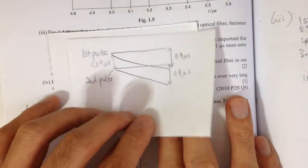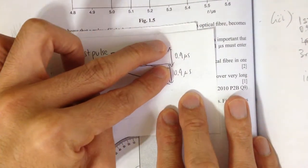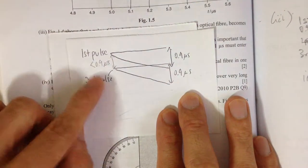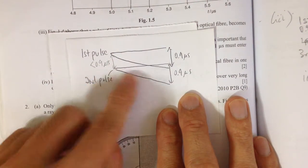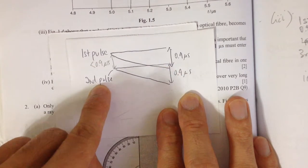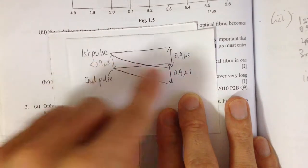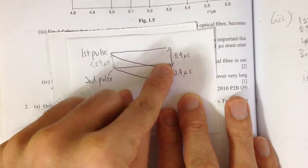Now, what happens if we have a case where the first pulse enters, have a 0.9 microsecond spread and the second pulse enters before 0.9 microsecond. When that's the case, you will see that the first pulse from the second pulse will overlap the last pulse of the first pulse. That means there will be some overlapping here.